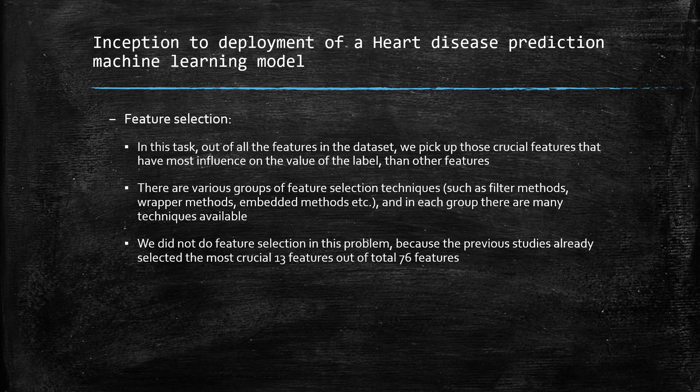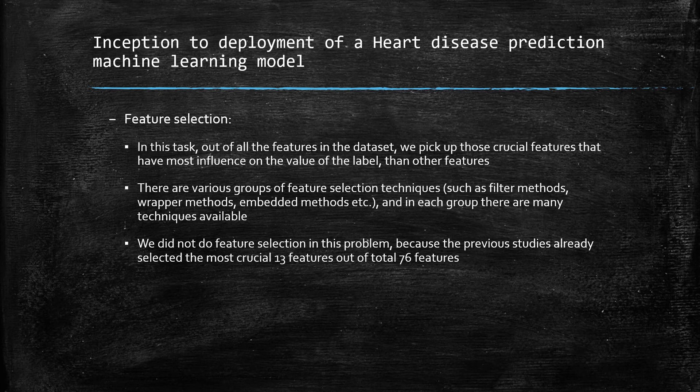Feature selection is a task in which we pick the crucial features that have the most influence on the value of the label, out of all the features available in the dataset. There are a number of feature selection techniques available, such as filter methods, wrapper methods, embedded methods, and others.